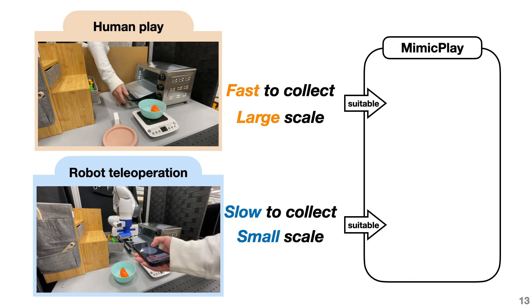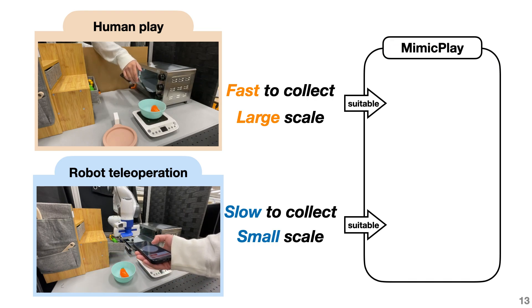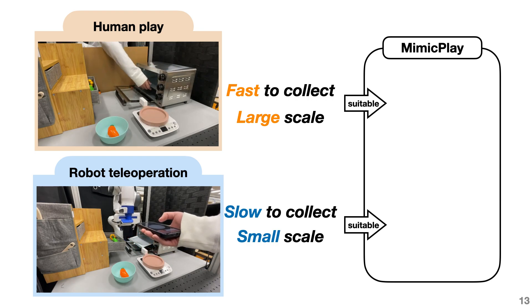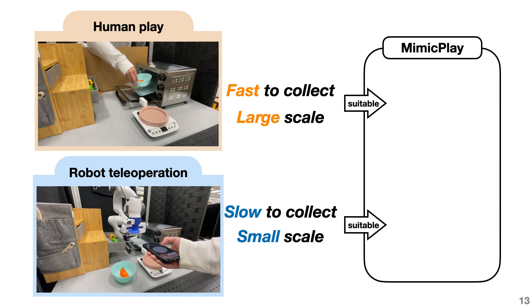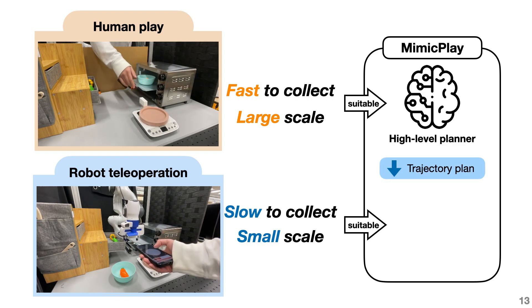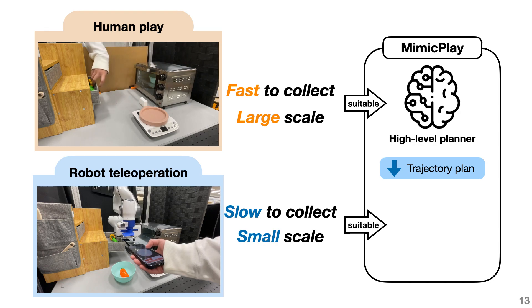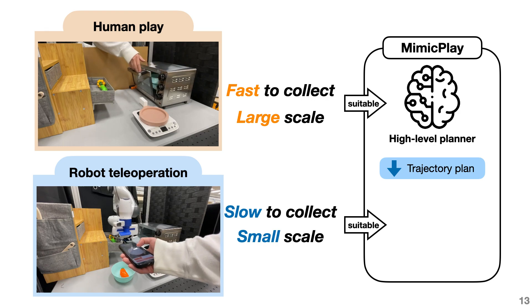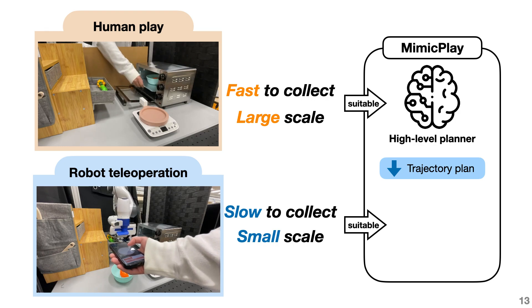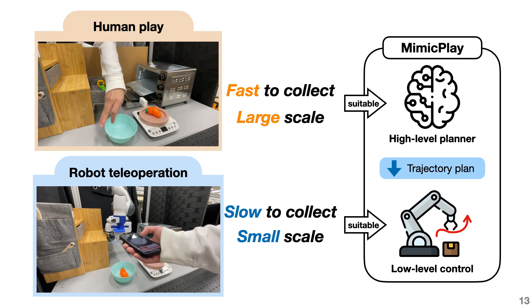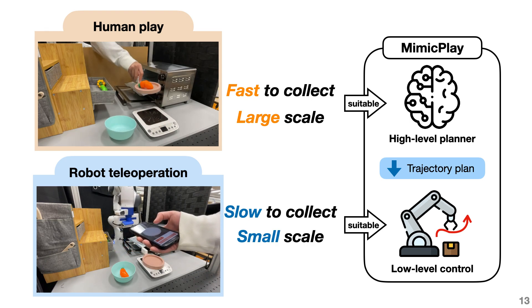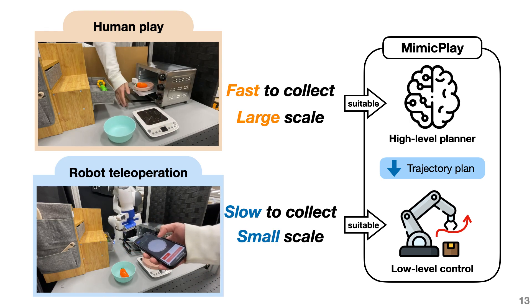Based on this hypothesis, we propose MimicPlay, a hierarchical imitation learning framework comprising a high-level planner learned from easy-to-collect human play data and a low-level motor controller learned from a small amount of robot data.